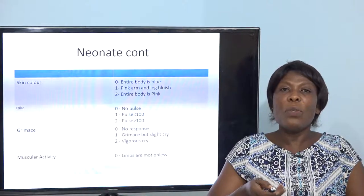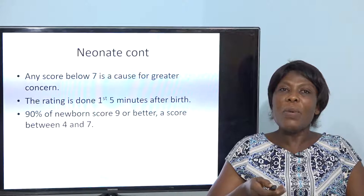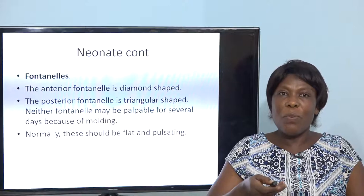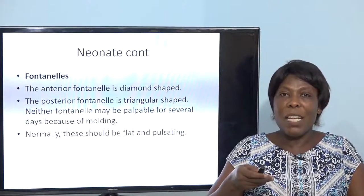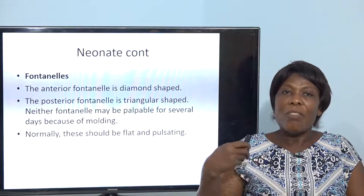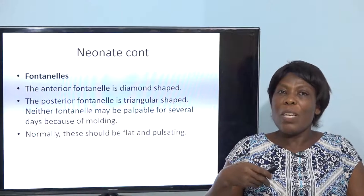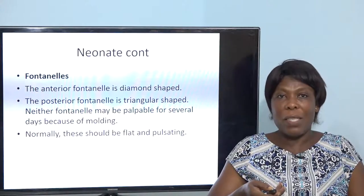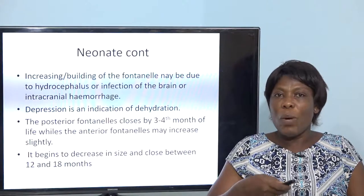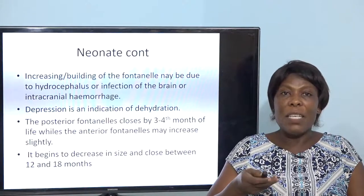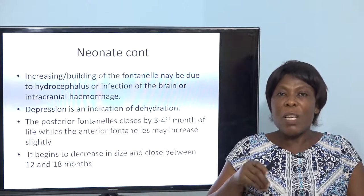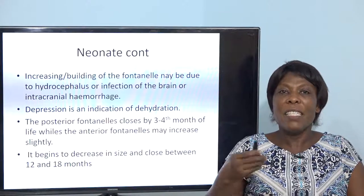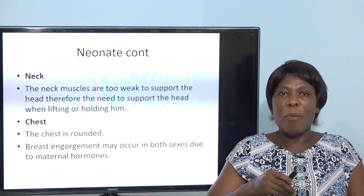Nobody can score ten over ten, and when the score is below four it means the child needs critical care. We learned how to take the width, length, and head circumference — the fontanels, both the diamond-shaped anterior fontanel and the triangular posterior fontanel — and how to assess them. Any problem with the fontanel presents as bulging or sunken, indicating excess fluid or dehydration.